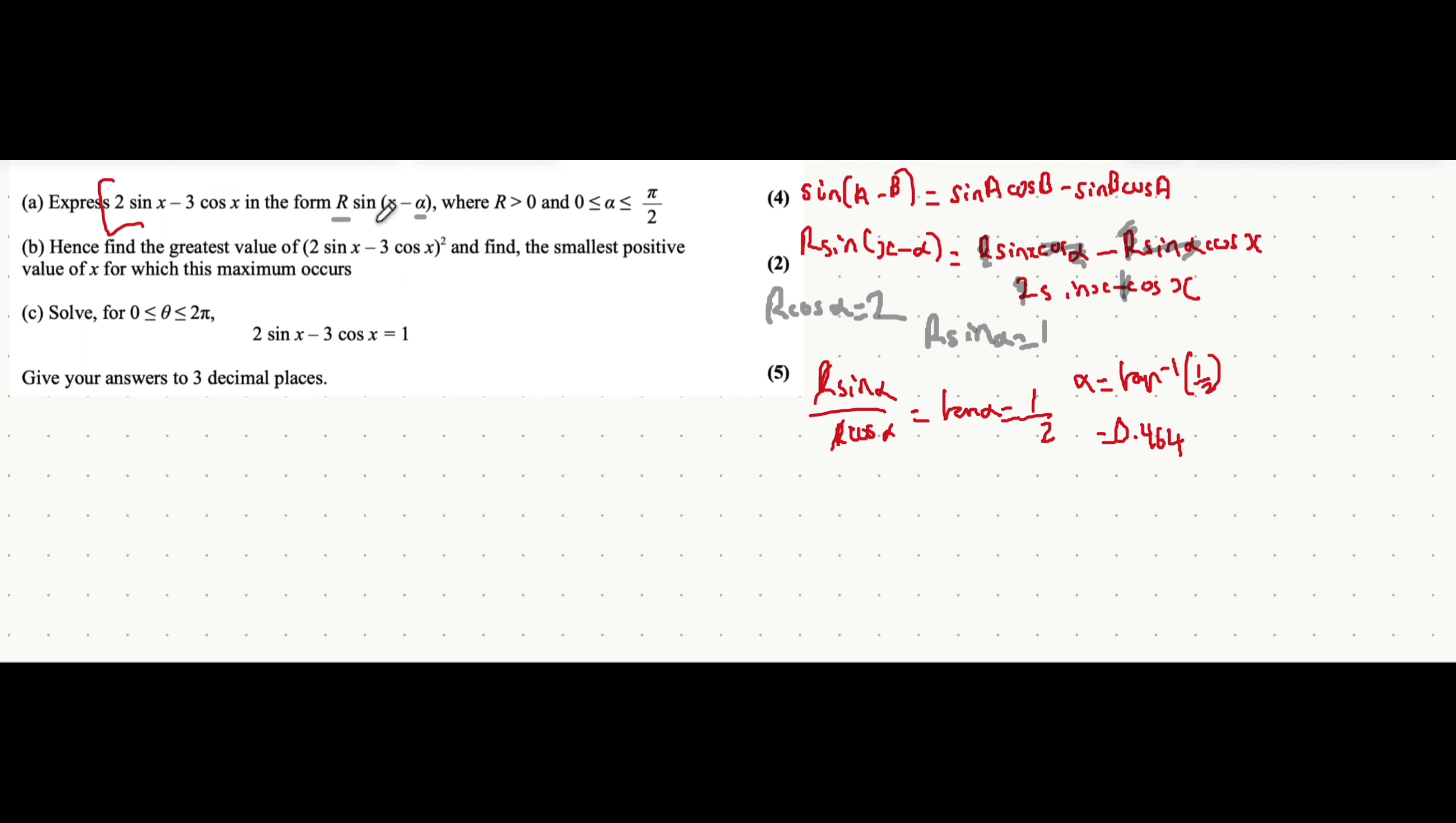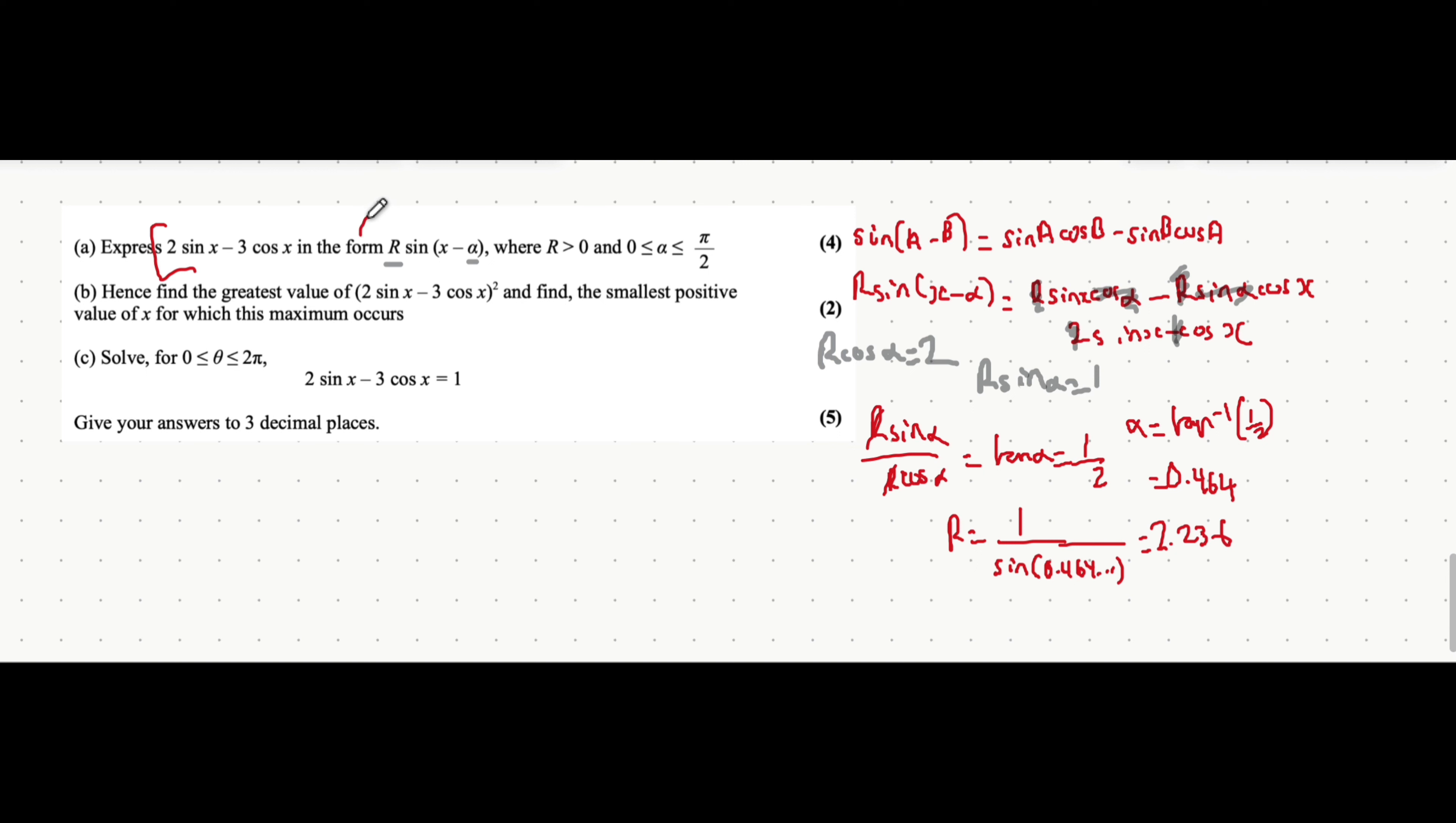We now need to find the value of R somehow and the easiest way to do that now that we've got alpha is we can just point to one of these two equations. So let's do that. In this case, we have R is equal to 1 over sine alpha and that's sine of 0.464, everything that's already expressed there. Putting all of that into your calculator, we have 1 over sine alpha, sorry, sine of that answer. And that will be equal to 2.236. So that means that we can write this expression here as 2.236 sine of x minus, and then the value of alpha that we got, 0.464. Perfect.